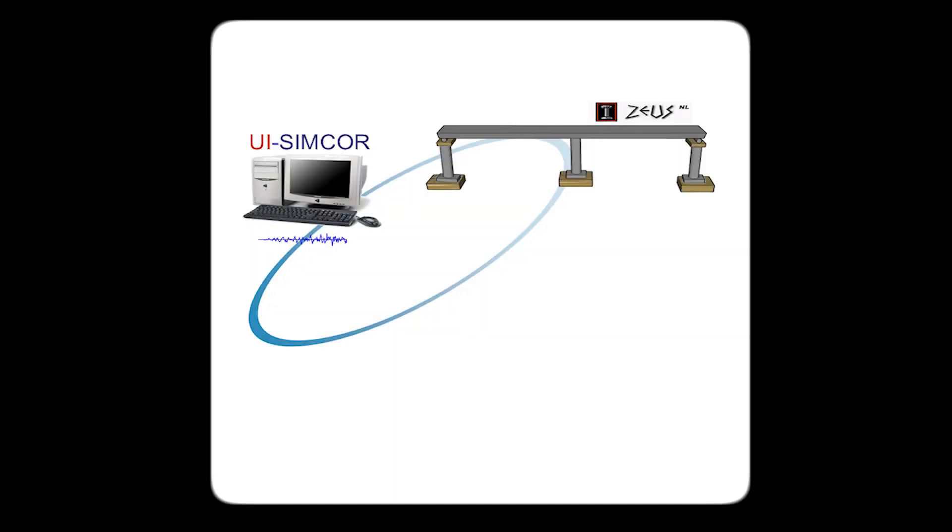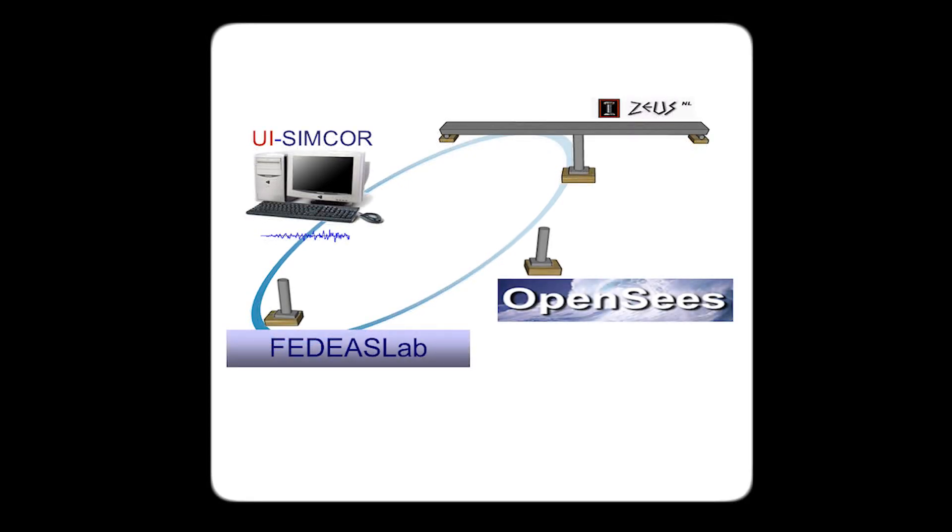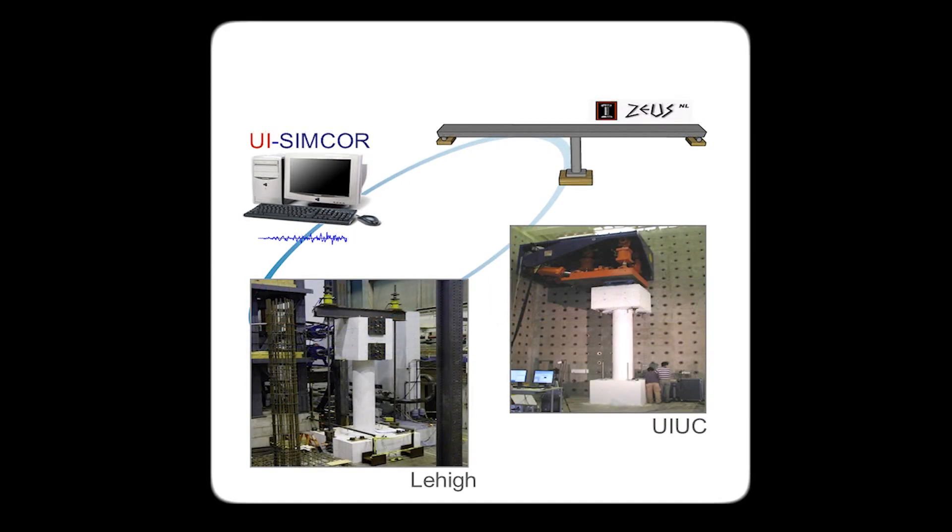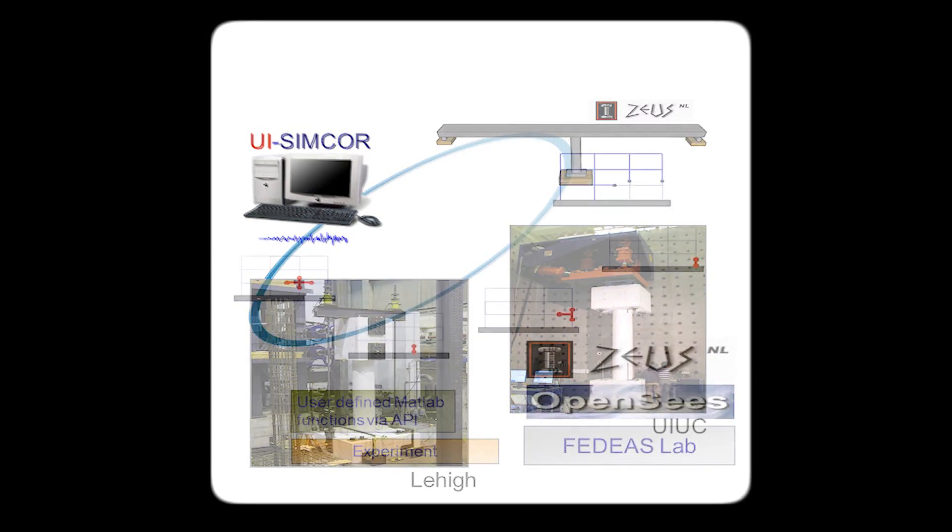For instance, a column within a building — we cannot have a building that is six stories high in the lab. But right now, we are actually using the interaction between the experimental setup and the analytical tools and software that the MassSim facility has developed. We can indeed virtually test a six-story building, focusing on the components that are most critical, which will be tested at full scale.